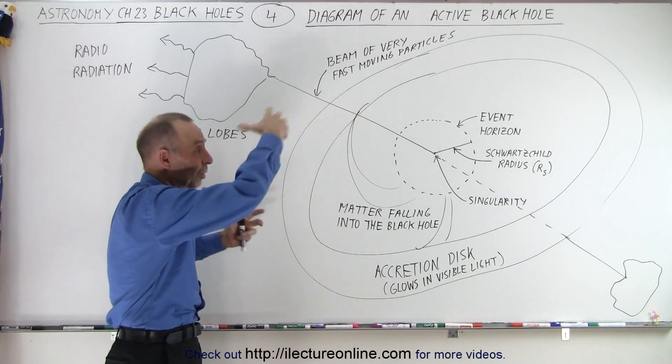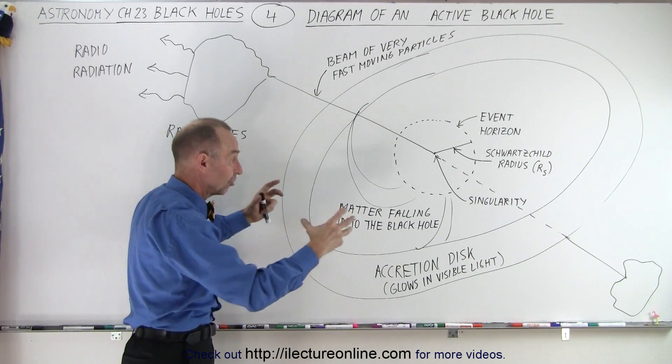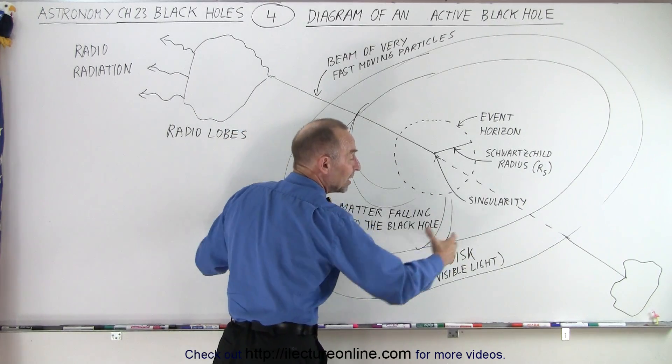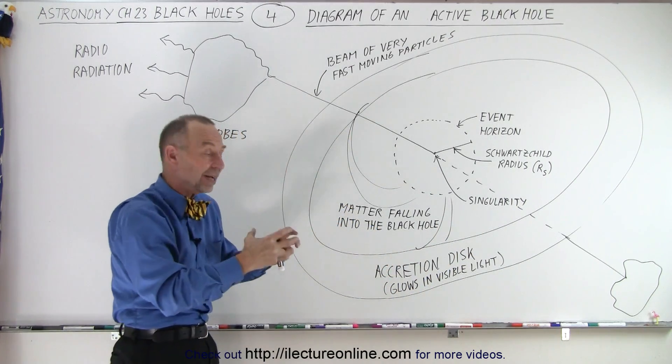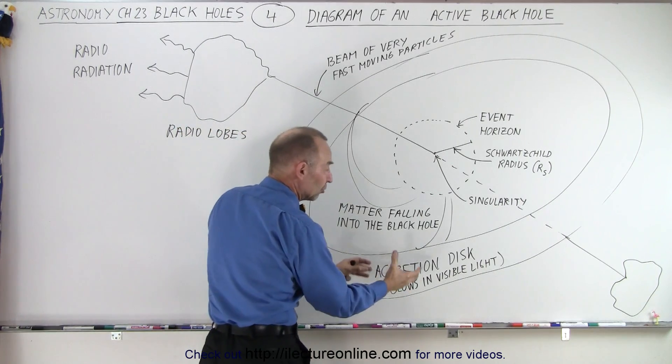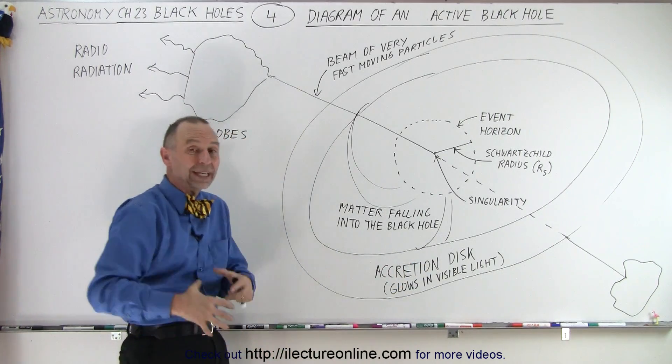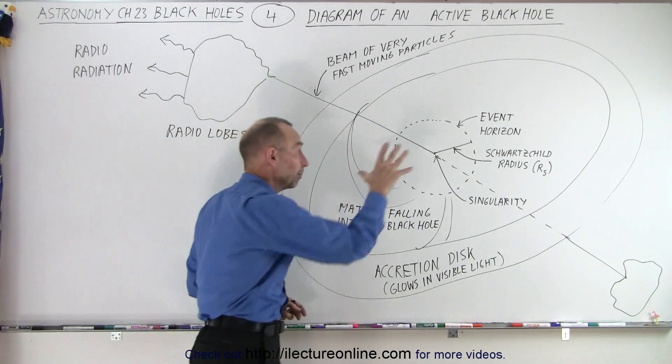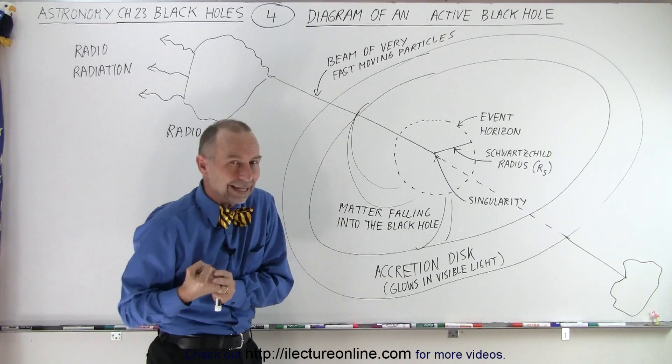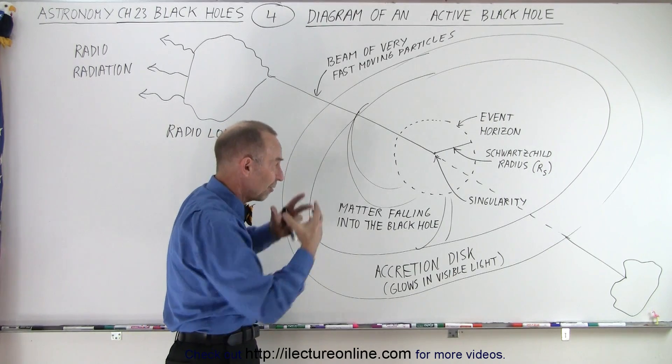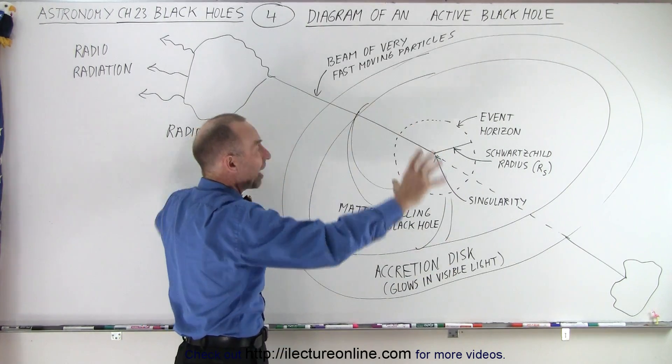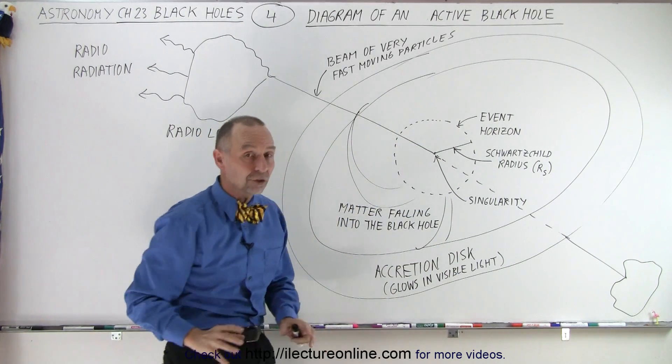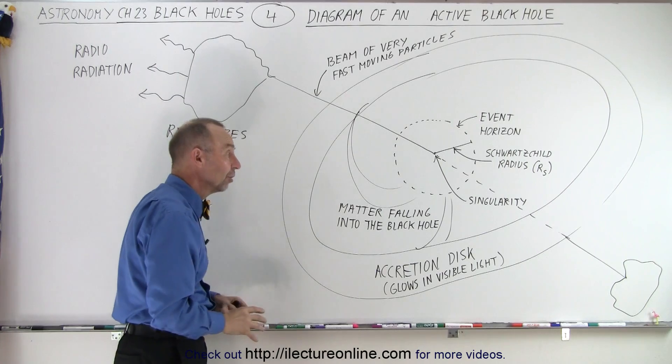As the debris is swirling, it will accelerate because it's getting closer to the black hole. There's a lot of friction and collisions within the debris. It heats the debris up to very high temperatures and the accretion disk will begin to glow in visible light. So we can actually take pictures of accretion disks around black holes. We may not see the black hole itself because nothing can get outside the event horizon from within, but around the black hole, if it gets hot enough, it will begin to glow.